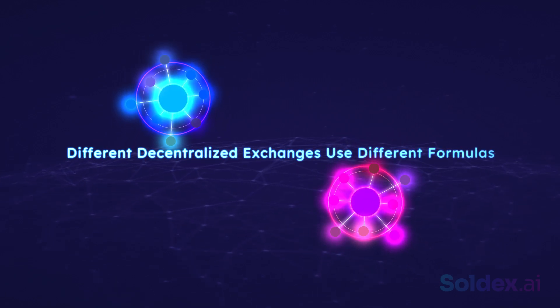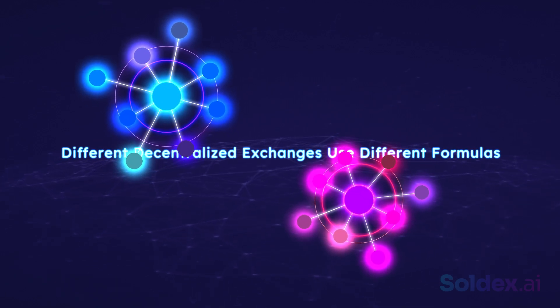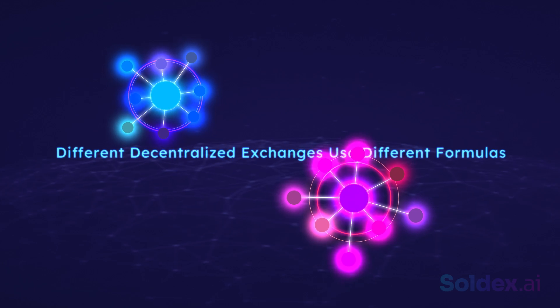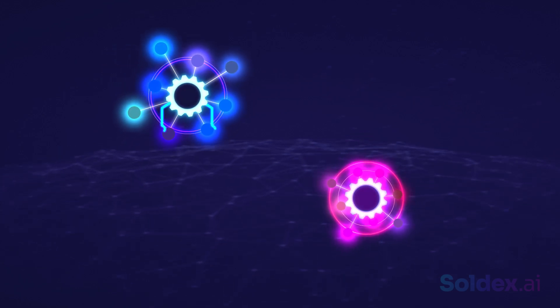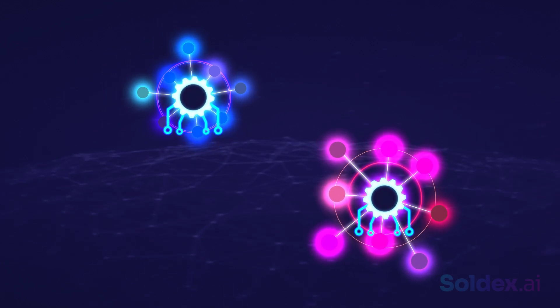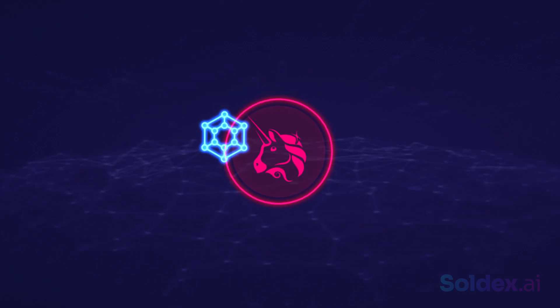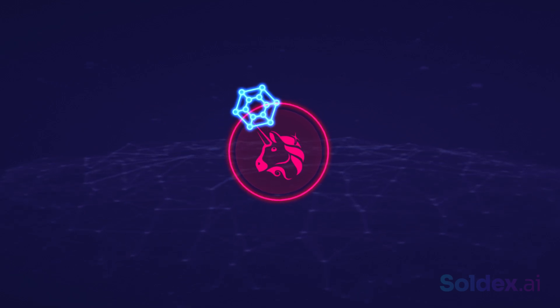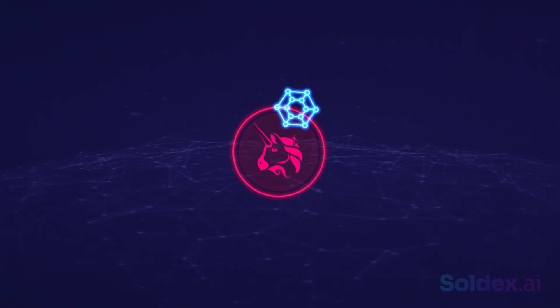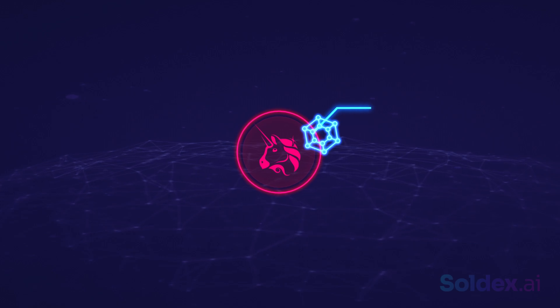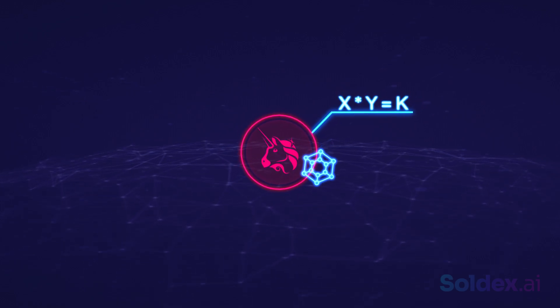Different decentralized exchanges use different formulas to calculate the prices of assets. However, they all have one thing in common. They use algorithms to determine the prices. One of the simplest formulas used is that of Uniswap. Uniswap uses a constant product formula to price assets, which states X times Y equals K.